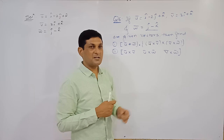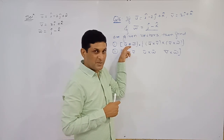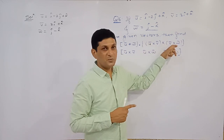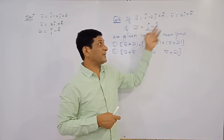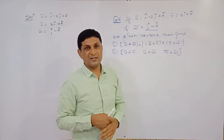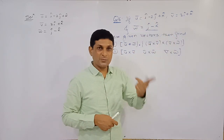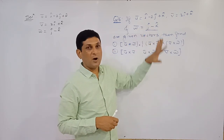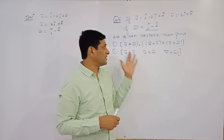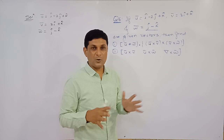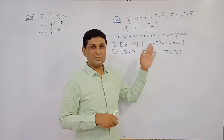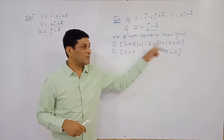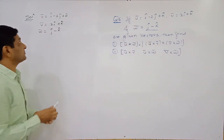To find this scalar triple product, we first need to find u̅ + v̅, then u̅ × v̅, and then v̅ × w̅. Note that there are some print mistakes in the textbook — v̅ is denoted as r̅, a minus sign is missing, and question number two is also not printed properly. So keep those corrections in mind.